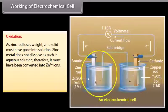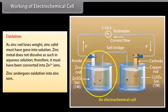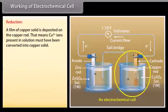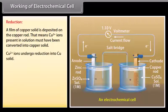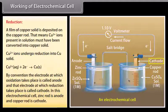Working of the electrochemical cell — Oxidation: As the zinc rod loses weight, zinc solid must have gone into solution. Zinc metal does not dissolve as such in aqueous solution; therefore it must have been converted into zinc ions — zinc undergoes oxidation into zinc ions. Reduction: A film of copper solid is deposited on the copper rod, meaning copper ions in solution are converted into copper solid — copper ions undergo reduction. By convention, the electrode at which oxidation takes place is called the anode, and that at which reduction takes place is called the cathode. In this cell, zinc rod is the anode and copper rod is the cathode.